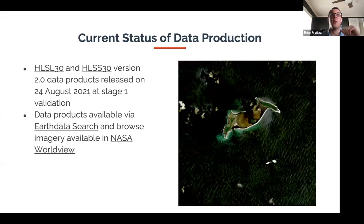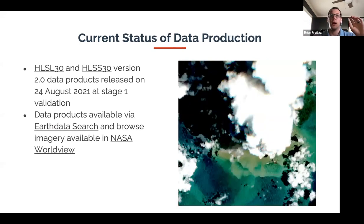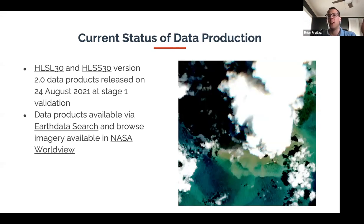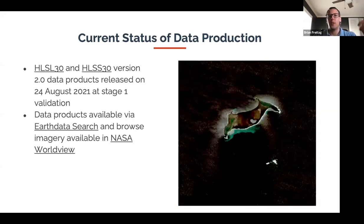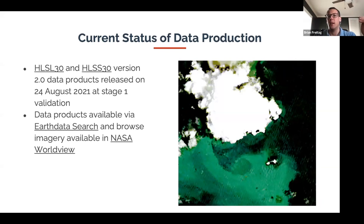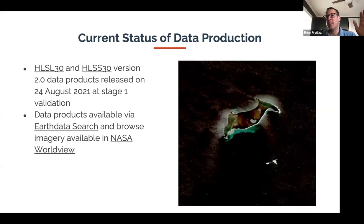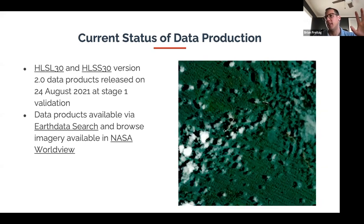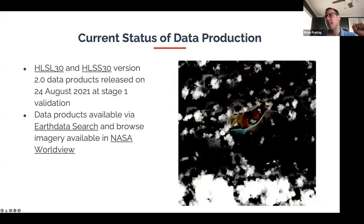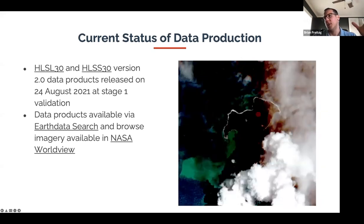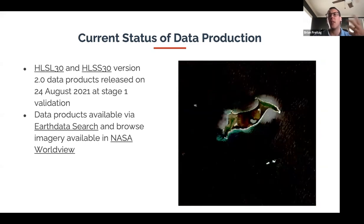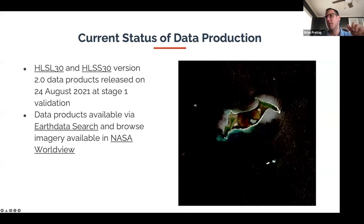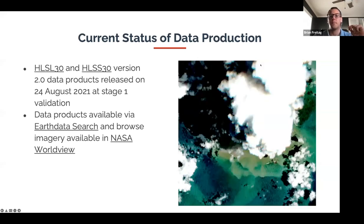Our current status: HLS L30 and S30 are both available for stage-one release, being distributed by the Land Processes DAAC as of August 24, 2021. You can search NASA Earth Data Search and find them there and in NASA Worldview — I have a demo coming up. This is the Tonga eruption from December: you can see the island, then the eruption occurs, and a couple scenes later there's no island. That's the resolution you can expect with the HLS products — something like a 300 by 300 pixel GIF looping through those scenes.